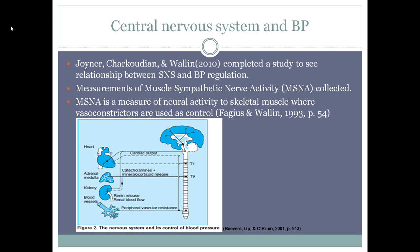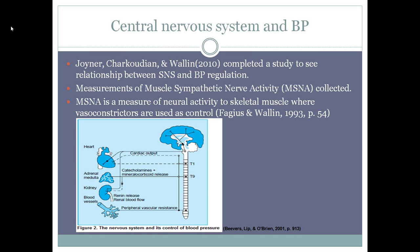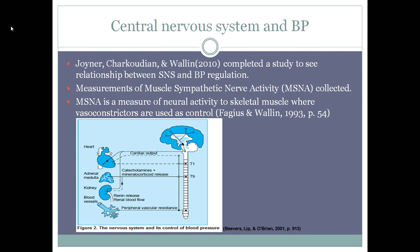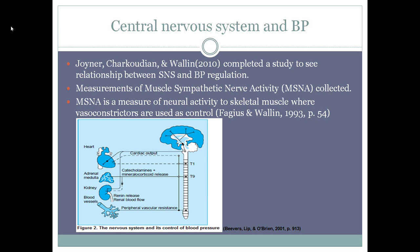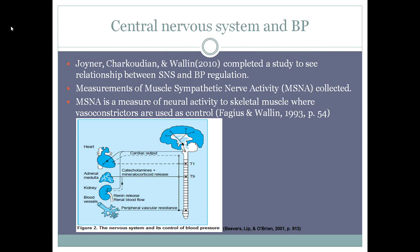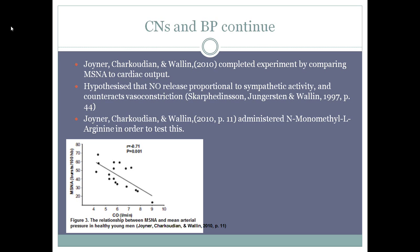Joyner and colleagues completed a study to determine whether the sympathetic nervous system plays a role in long-term blood pressure regulation in humans. They collected direct measurements of muscle sympathetic nerve activity, referred to as MSNA. MSNA is a direct measure of neural activity to skeletal muscle, where vasoconstrictors are used as a control to hemodynamic control, both at rest and during daily activities. MSNA along with hemodynamic measurements allows us to see the relationship between sympathetic neural activity and blood pressure regulation. Joyner and colleagues compared MSNA to cardiac output, hypothesizing that low cardiac output would influence higher sympathetic nerve activity and vascular resistance. Their results show an inverse relationship between MSNA and cardiac output.